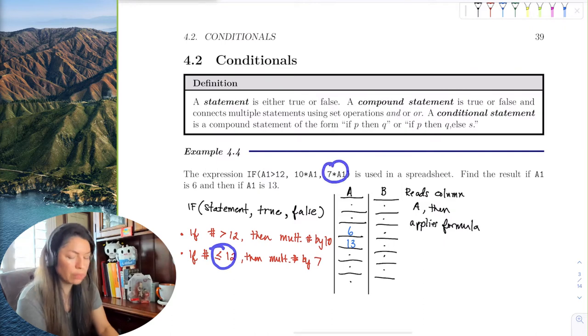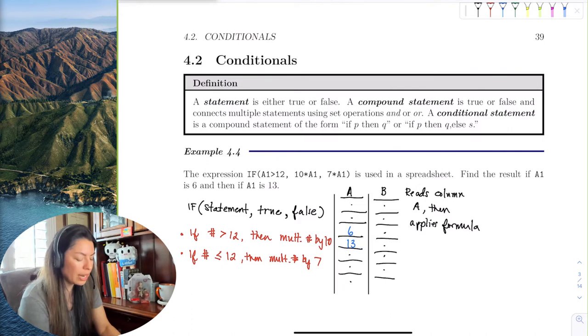And here is this formula and it says, oh this is 6, 6 is not greater than 12, then I must multiply by 7. Then it analyzes the number 13, and 13 is greater than 12, so multiply by 10.